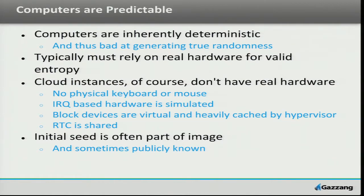But in cloud instances, in virtual machine guests, we don't have real hardware. We don't have a physical keyboard that we can take timestamps between key presses. We don't have a mouse. We don't have hardware. Any hardware we do have — the IRQs — well, the hardware itself is simulated, and the IRQs really don't have reliable timestamps or reliable differences in timestamps.